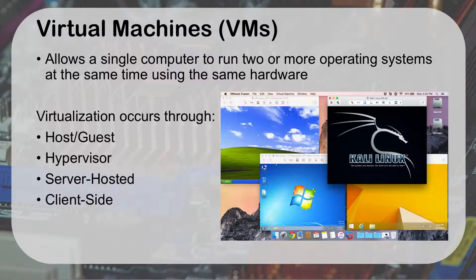In virtualization, you have what's called a host and a guest. The host is the physical machine you're using — in my case, a Macintosh. The guests are the other operating systems that are running. The hypervisor is the software that creates the virtual computer for each of them to run on. They can be server-hosted, running on a server down the hall or across the world, or you can do it client-side, which is what mine was doing. At one school where I teach ethical hacking, students log into a virtual environment through their web browser and run virtual machines without anything installed on their own machine.